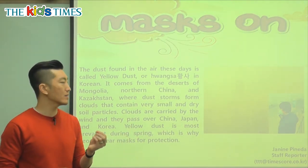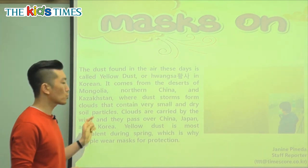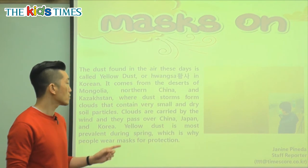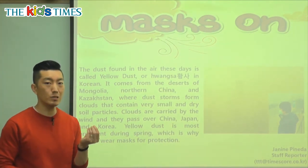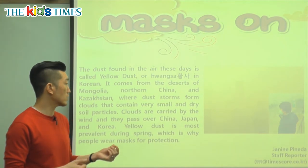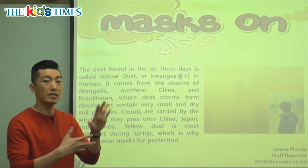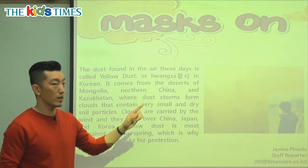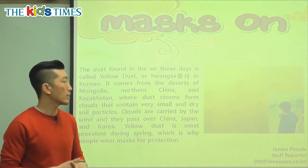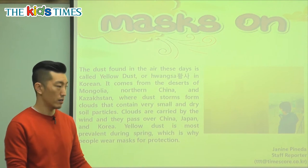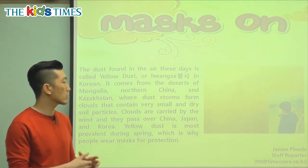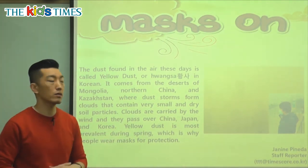Particles are tiny little bits of something, and soil means the dirt coming from the earth, the ground. A lot of these dry, small specks — tiny pieces of dust, dirt, and soil — are mixed into the cloud. That's what we call yellow dust. It's yellow because of the color of the sand or soil, the dry particles being blown by the strong winds.